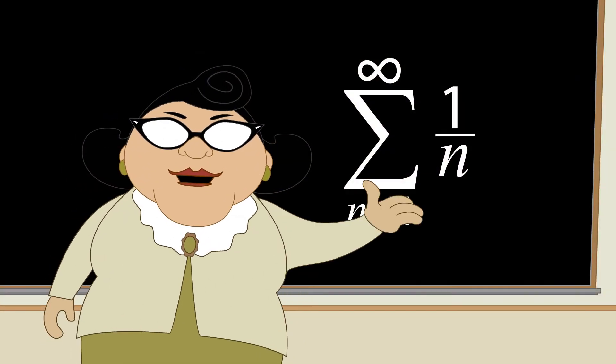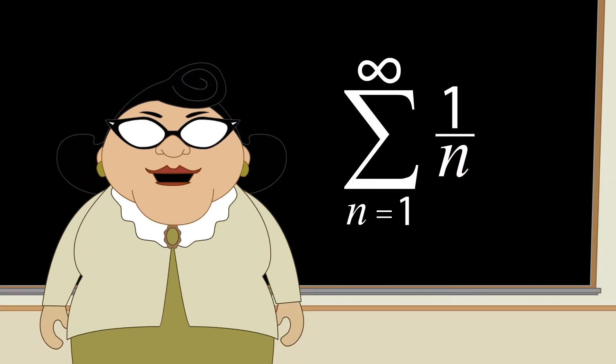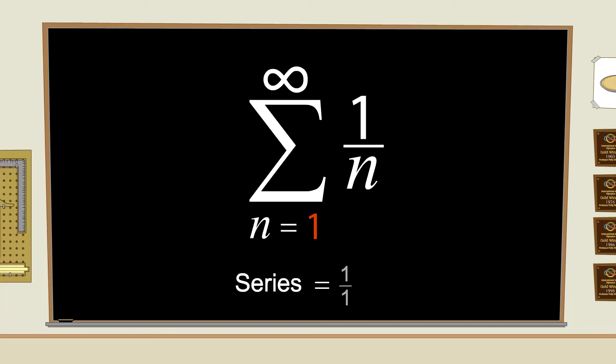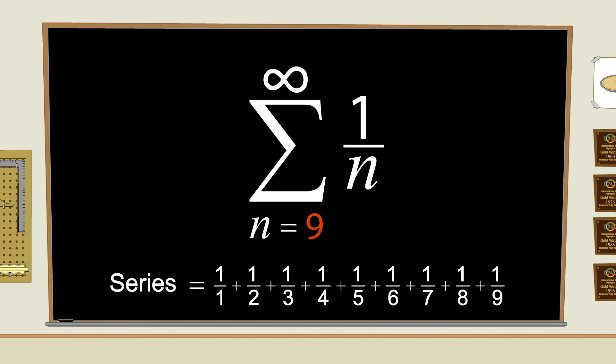Well, let's try a series with the terms 1 over n. Now, the first term in this series is 1 divided by 1, or 1. The second term is 1 divided by 2, or 1 half. The third term is 1 third, and so on. Each term is smaller than the previous term.